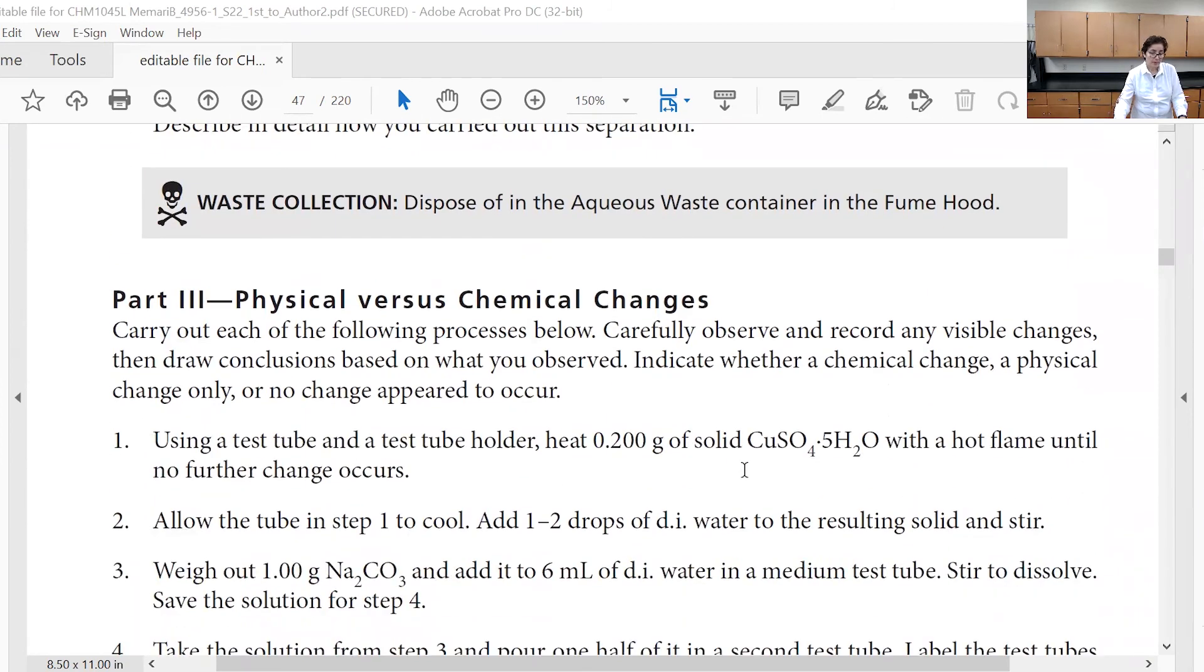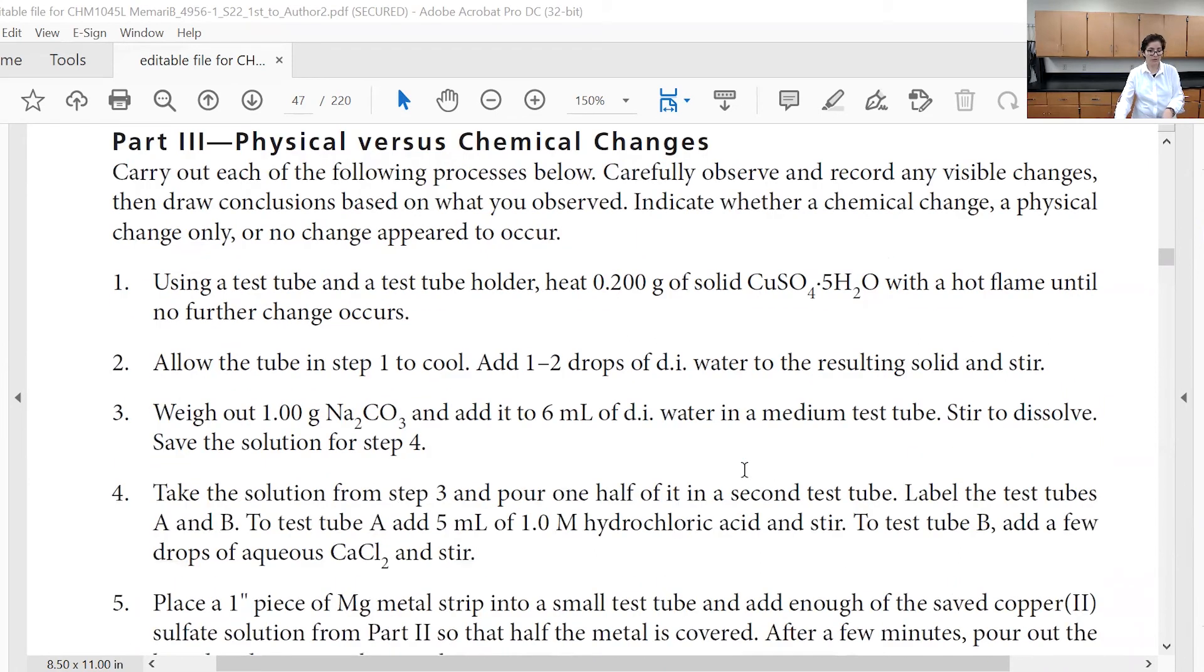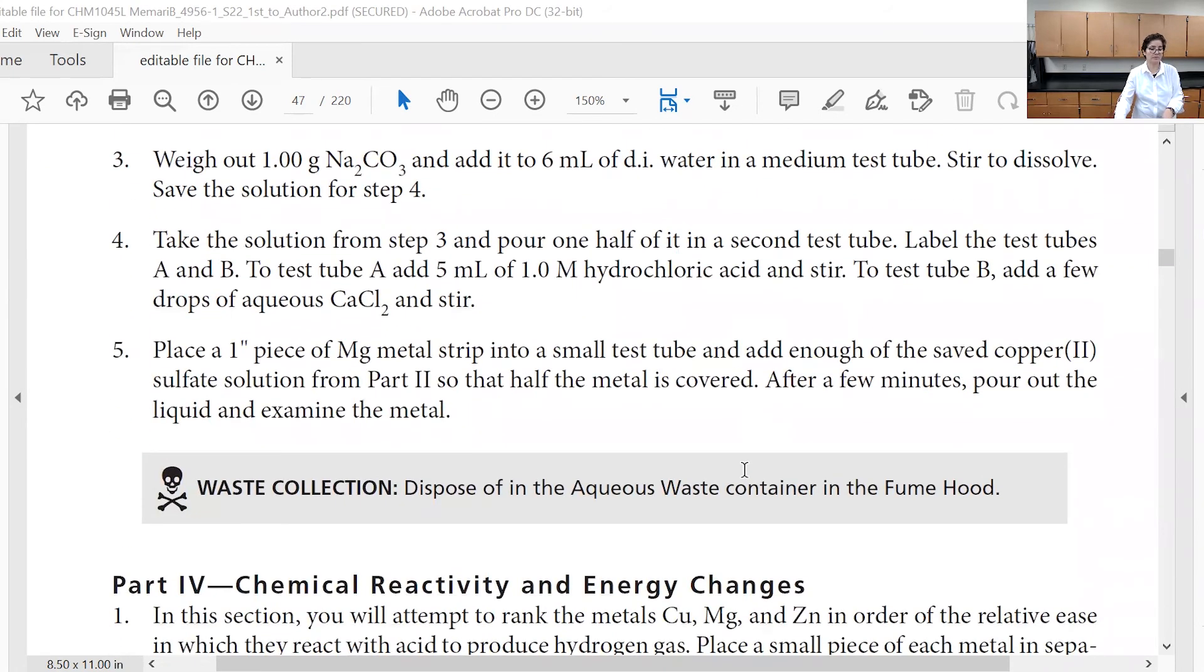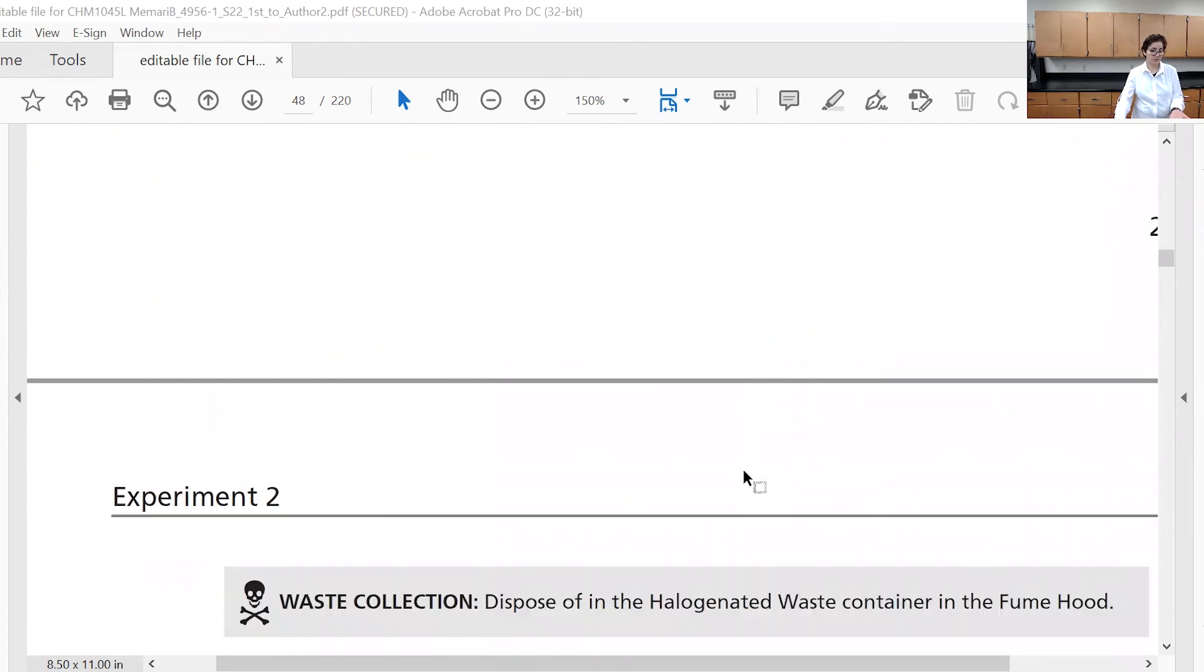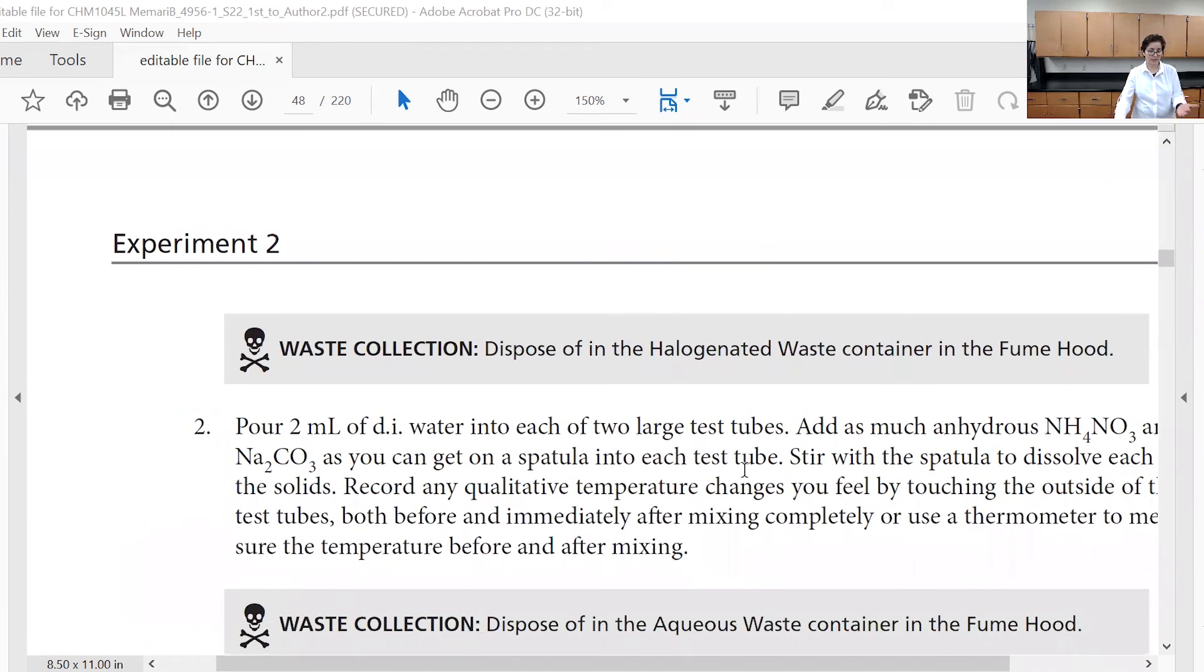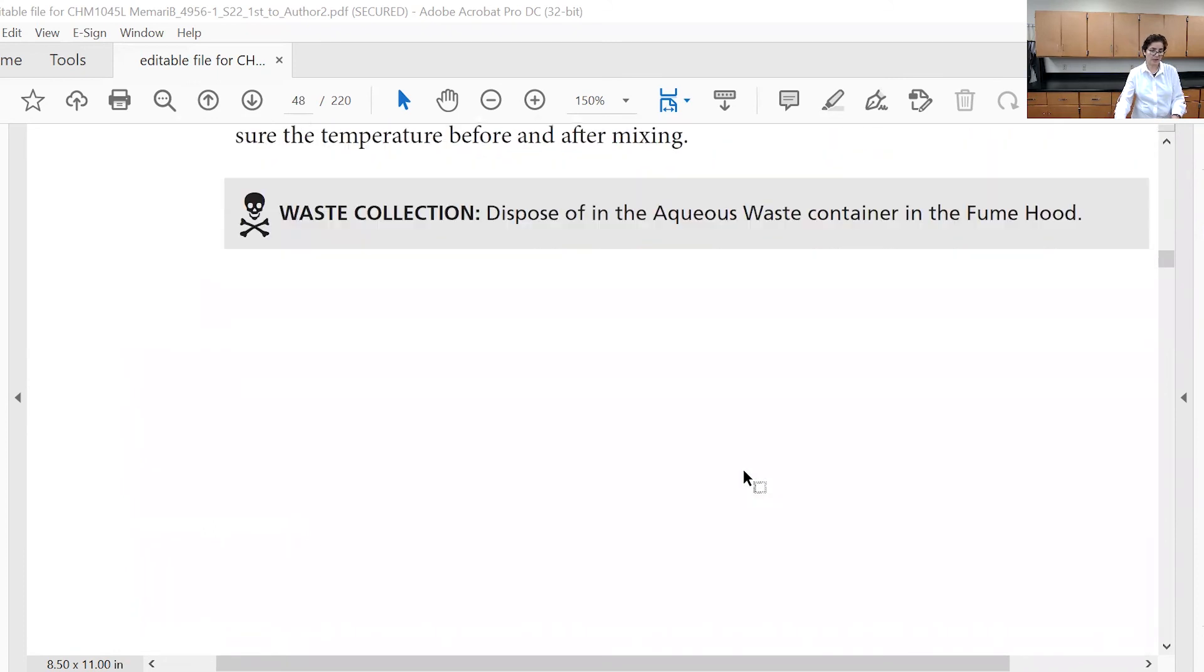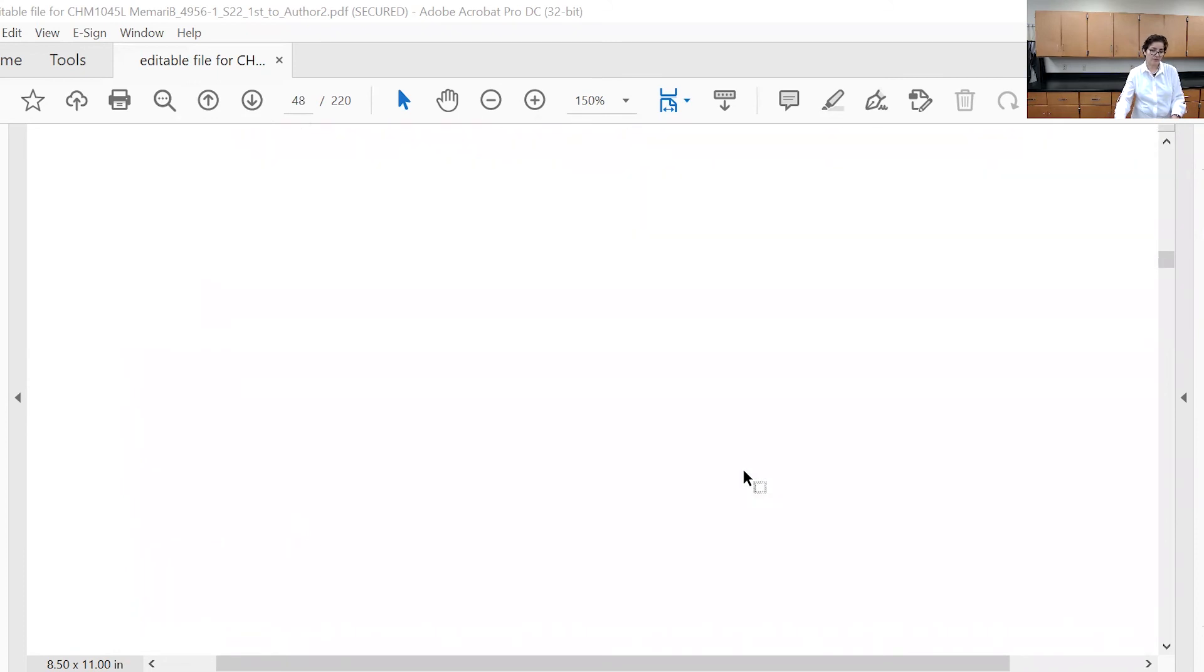The other reactions - anything that is reversible would be physical. Anything that is not reversible would be chemical. If heat is released, then it's going to be exothermic, and if heat is absorbed, it's going to be endothermic type of reaction.